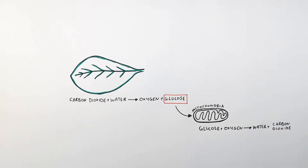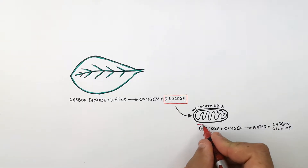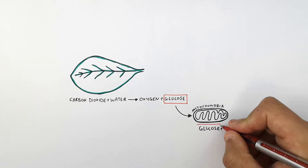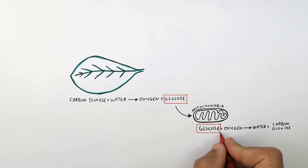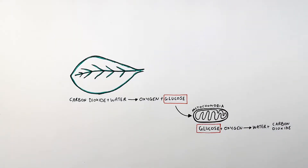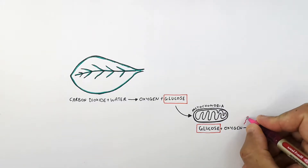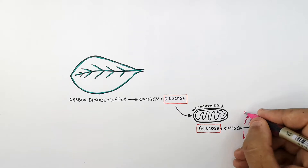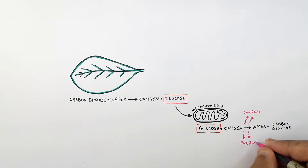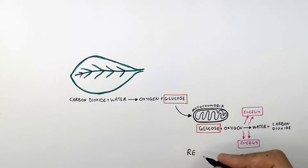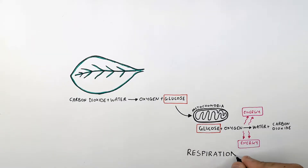This is aerobic respiration, which is the complete combustion of glucose in the presence of oxygen, and this releases energy. So there is a release of energy during this reaction. This process is called aerobic respiration, so glucose is used for respiration.